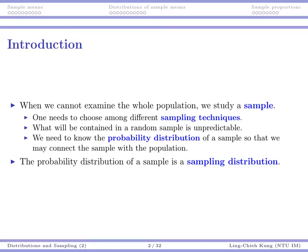In general, we just cannot examine the whole population. In that case, we rely on a sample so that we can infer what's happening in the population. When you have something unknown, when you have something that's going to happen in the future, or when you have a too large population that you cannot examine, then you need a sample.